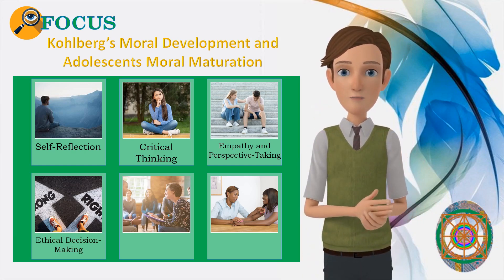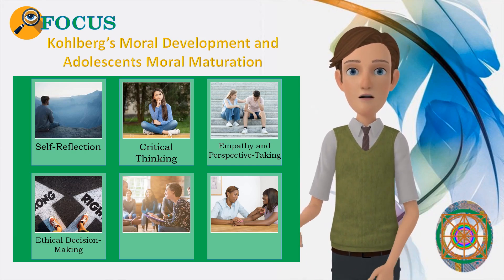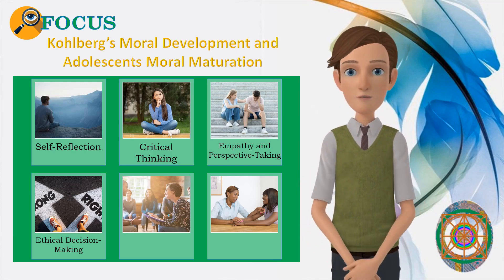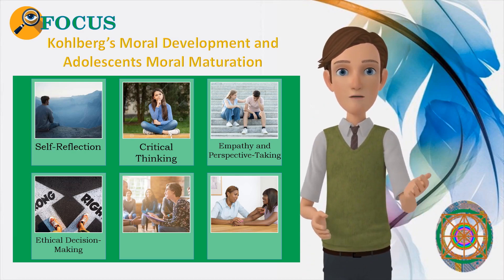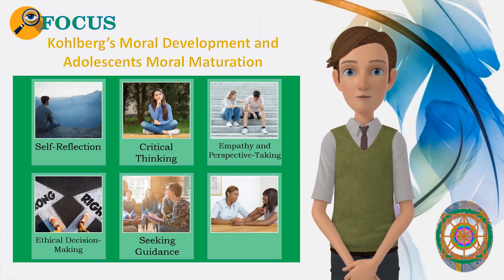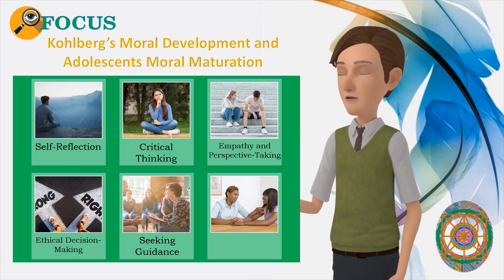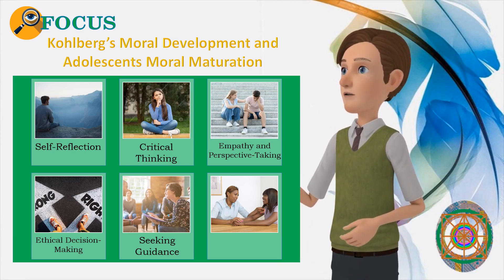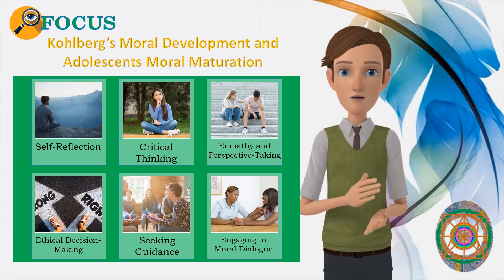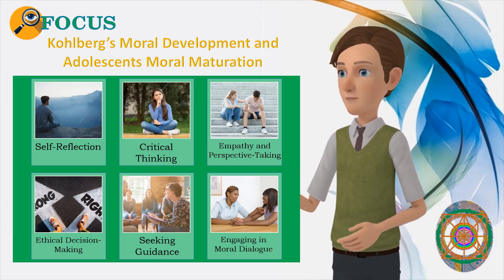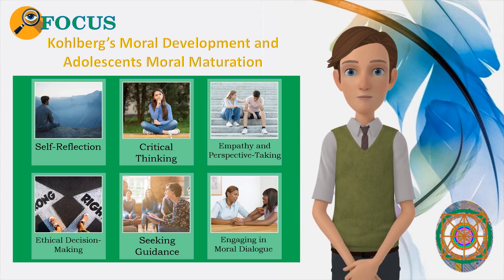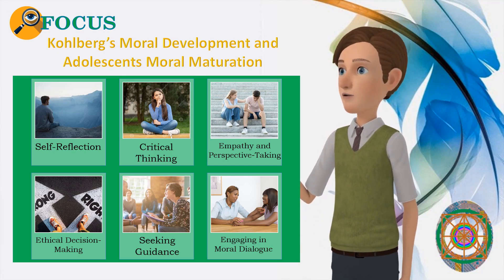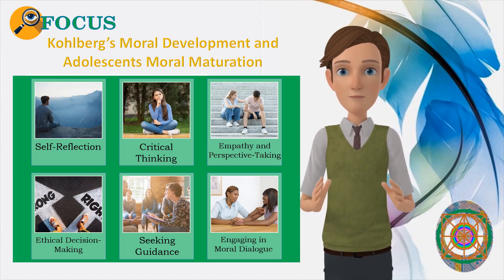Ethical decision-making: Kohlberg's theory provides a framework for making ethical decisions based on universal moral principles. By internalizing these principles and applying them to real-life situations, you can navigate moral dilemmas with confidence and integrity, making decisions that align with your values and beliefs. Seeking guidance: Kohlberg's theory emphasizes the importance of mentors and role models in moral development. You can seek guidance from teachers, parents, and other trusted adults who can provide support, feedback, and positive examples of ethical behavior, helping you grow and mature morally. Engaging in moral dialogue: Kohlberg's theory encourages open and meaningful conversations about moral issues. By engaging in moral dialogue with peers and adults, you can explore different perspectives, challenge assumptions, and broaden your understanding of complex ethical issues, furthering your moral development.